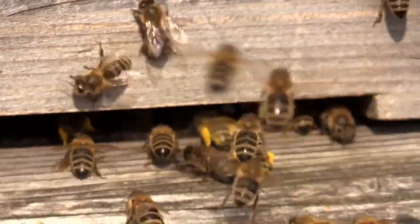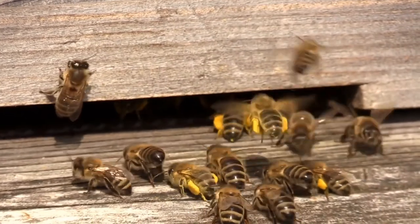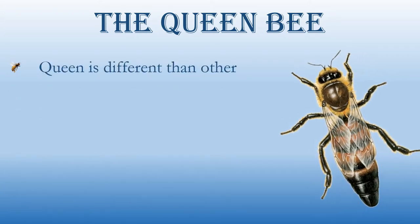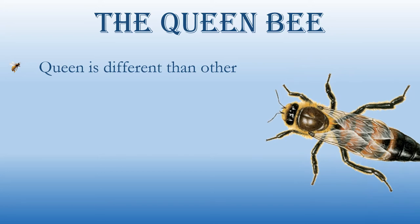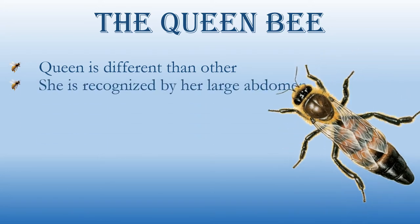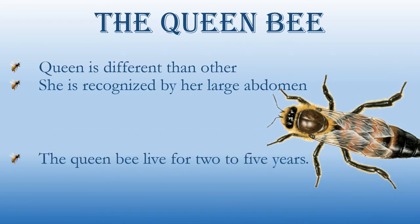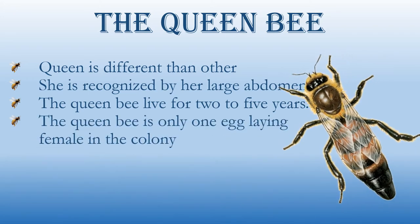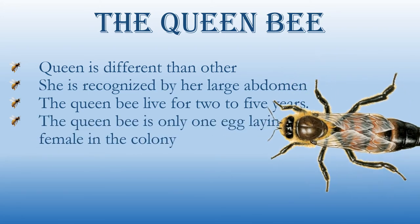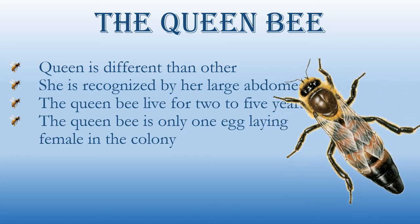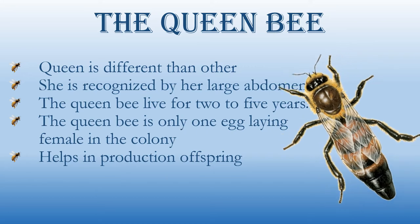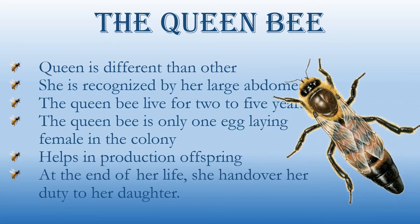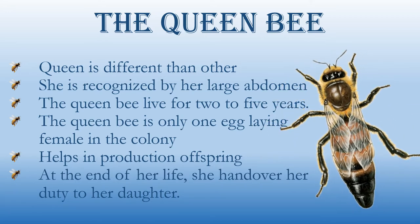The queen bee is different from the other bees — she is recognized by her large abdomen and lives for two to five years. She is the only egg-laying female in the colony, helping in the production of offspring. At the end of her life, she hands over her duty to her daughter.